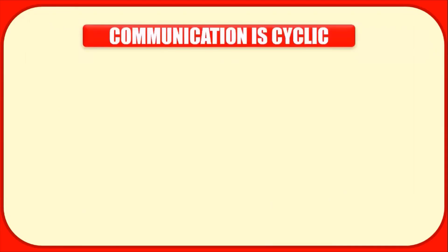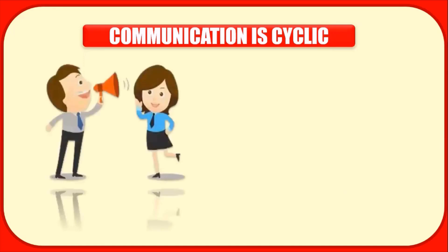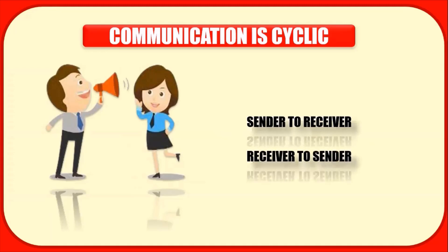The final hallmark is that communication is cyclic, meaning communication takes place between sender and receiver continuously. The sender communicates to the receiver, the receiver interprets the message and communicates back to the sender, and this process continues. It is therefore also called a continuous and unending process — it is only when the sender decides to end the process of communication that it can actually end.